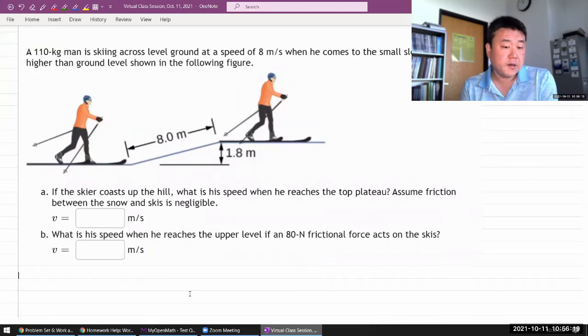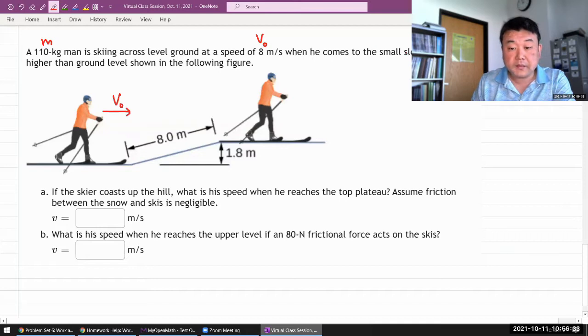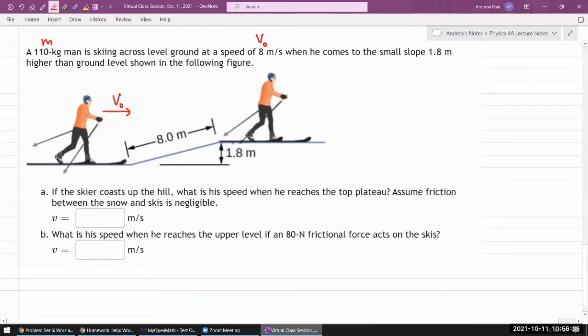So, this is the question. It says that someone of some mass m is moving at some speed v0 as they're coming to the bottom of an incline. And after going over this incline, they will be at a height h, higher than ground level.